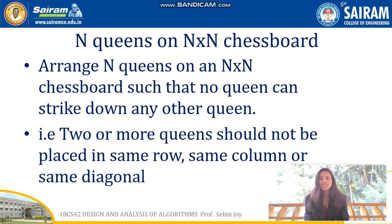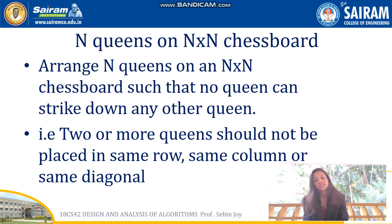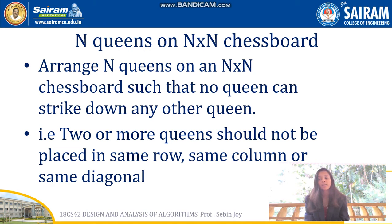The N-Queens problem involves an N×N chessboard where you have to place N queens such that no queen can strike down any other queen. That means no two queens should be in the same row, same column, or same diagonal. An N×N chessboard is given with N queens, and you must place them so no two queens can attack each other.